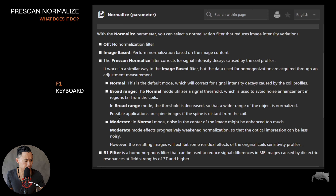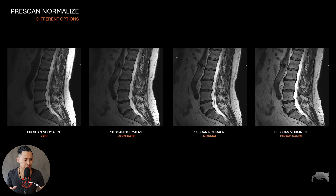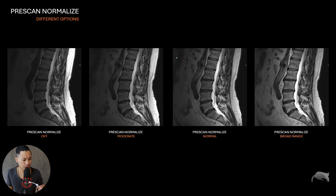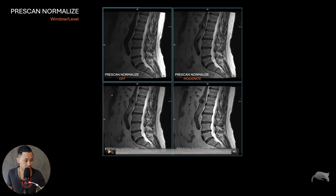You can do further reading on this. As I showed you, the options are off, normal, broad range, and moderate. I did further testing on another anatomy to see if there are any benefits, because with spine imaging the anatomy can be a little bit further away from the coil if the patient is large.